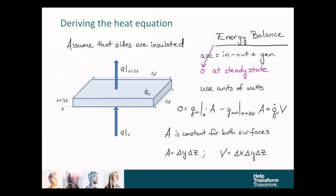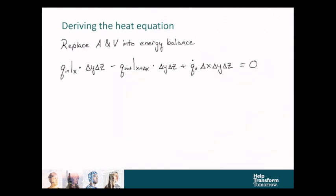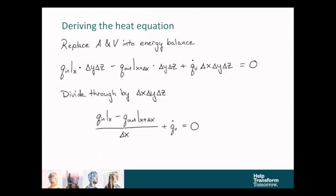So given those definitions, we're going to plug them back into our energy balance. And so we get a slightly longer expression with lots of differential length scales. But we can divide by delta x, delta y, delta z. And when we do that, most things cancel out. And all we're left with is that one delta x in the denominator of the heat flux term.